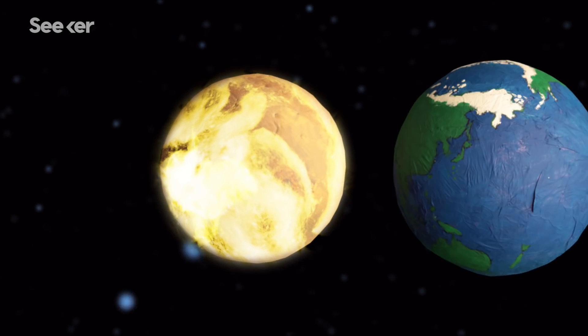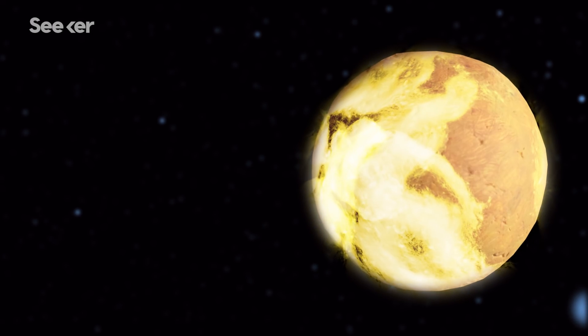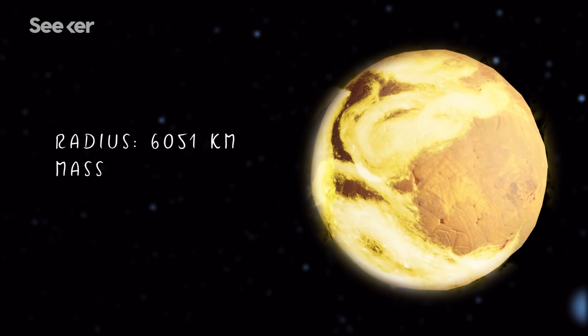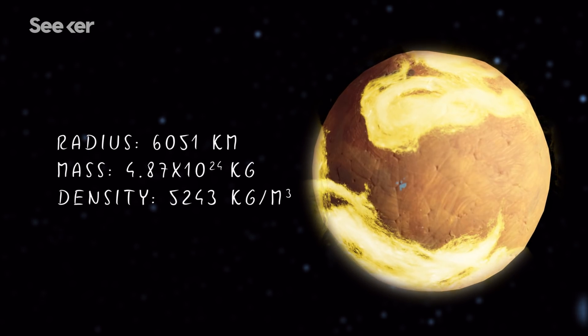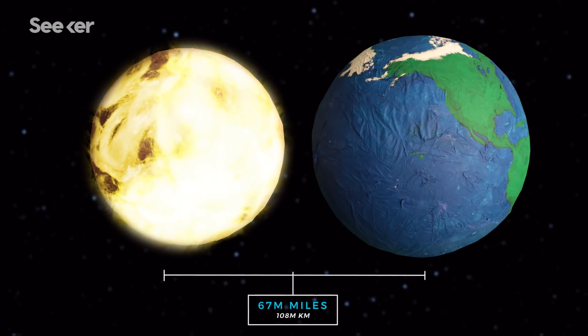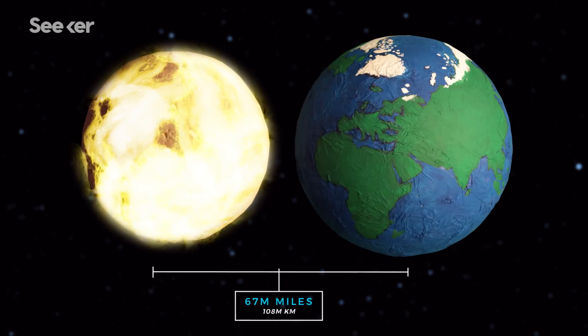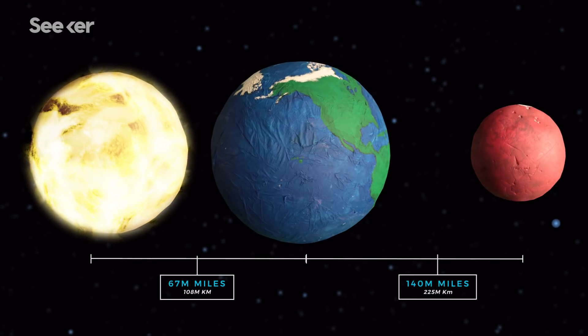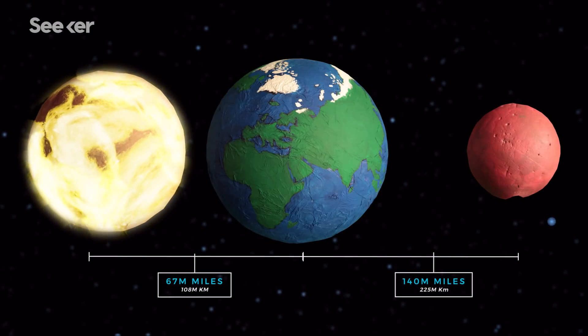Let's start with Venus. This wild world is a terrestrial planet with similar size, mass, and density to Earth. It's also pretty close, 67 million miles away. We could get there by spacecraft in about 5 months versus the 9 months it'd take to reach Mars, which is 140 million miles from Earth.